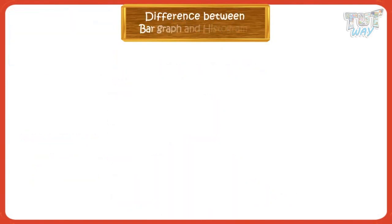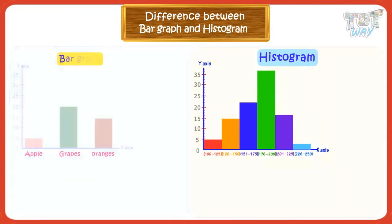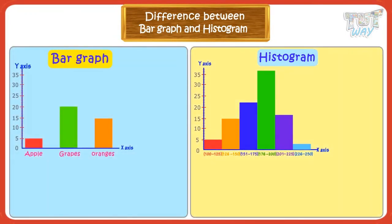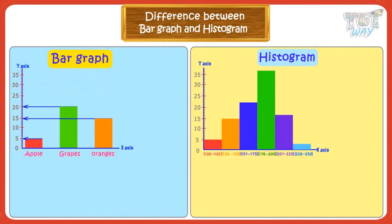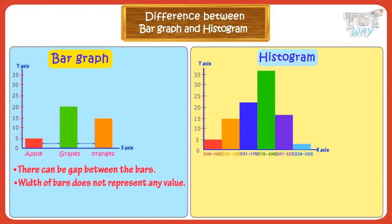Now let's see what's the difference between histograms and bar graphs. In bar graphs, one axis shows the scale for numeric data and the other shows the textual data, where bars are drawn and the height of each bar relates to the numeric value that the textual data holds. There can be a gap between the bars. The width of bars does not represent any value in bar graphs — only the height represents the quantity of the textual data related to that bar.